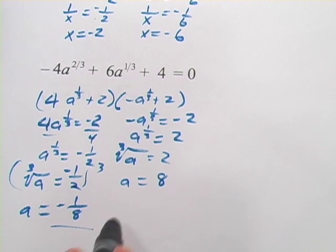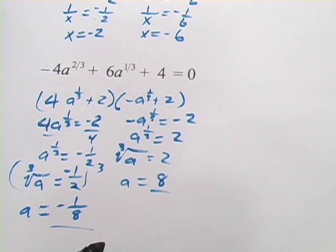So our answers here are negative 1 eighth and 8. So that's a little bit about solving these equations that are in quadratic form with negative and fractional exponents.